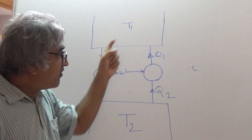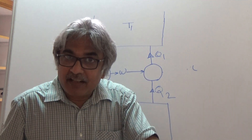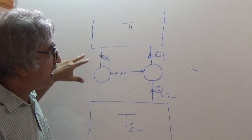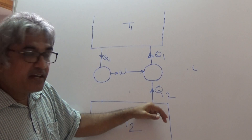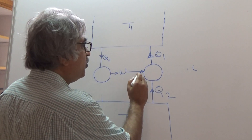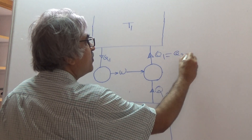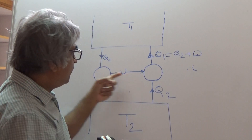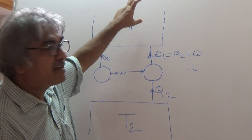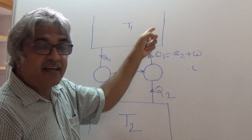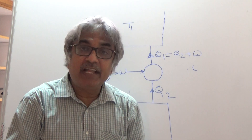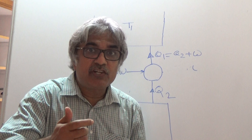What we violated was the Kelvin-Planck statement, but we have logically proved that the Clausius statement also gets violated. Think about it: in this combined system, Q2 is lifted from the low-temperature reservoir, W is added internally, so Q1 equals Q2 plus W. The work comes from the engine internally, and the net result is heat flowing from low to high temperature without any external work — that is a violation of the Clausius statement.